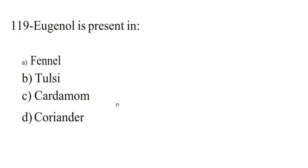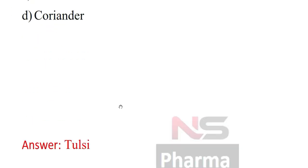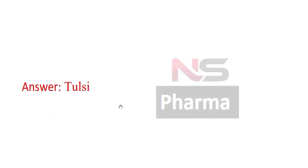Next question. Eugenol is present in: Option A. Phenyl. Option B. Tulsi. Option C. Cardamom. Option D. Coriander. Answer: Tulsi.